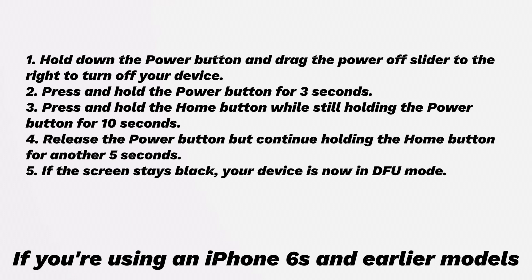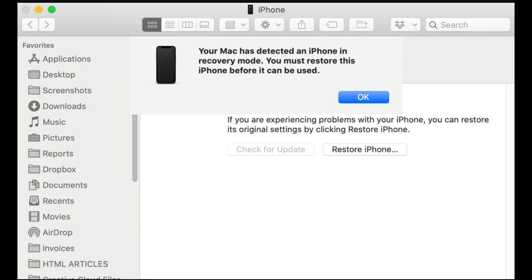If you're using an iPhone 6s or earlier models: press and hold the Power button for 3 seconds. Then press and hold the Home button while still holding the Power button for 10 seconds. Then release the Power button but continue holding the Home button for another 5 seconds. If the screen stays black, your device is in DFU mode. If you see any logos or messages on the screen, start over. Keep your phone connected to the computer and go back to iTunes or Finder. If you see an alert saying it detected your iPhone in recovery mode, your iPhone has entered DFU mode successfully.